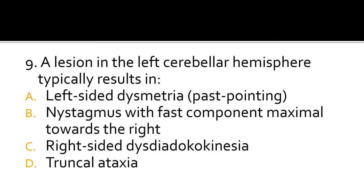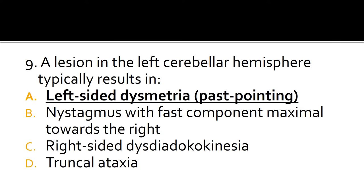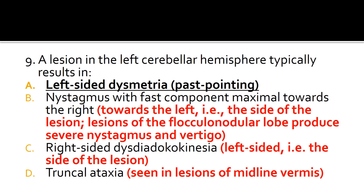The correct answer is A, left-sided dysmetria. B is false because if there is nystagmus, the fast component would be maximal towards the side of the lesion — in this case, towards the left. Lesions of the flocculonodular lobe produce severe nystagmus and vertigo. C is false because a left cerebellar hemisphere lesion results in left-sided dysdiadochokinesia. D is false because truncal ataxia is typically seen in lesions of the midline vermis.